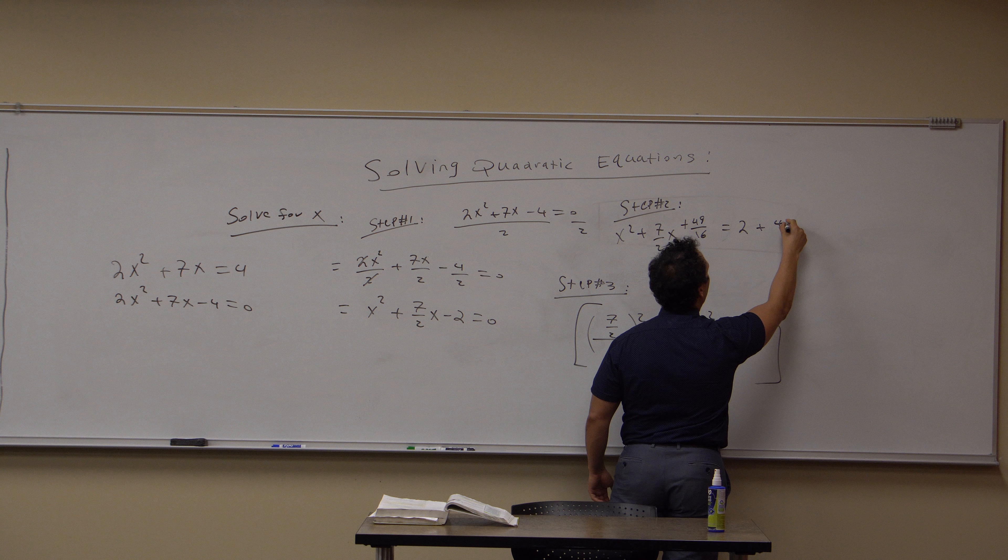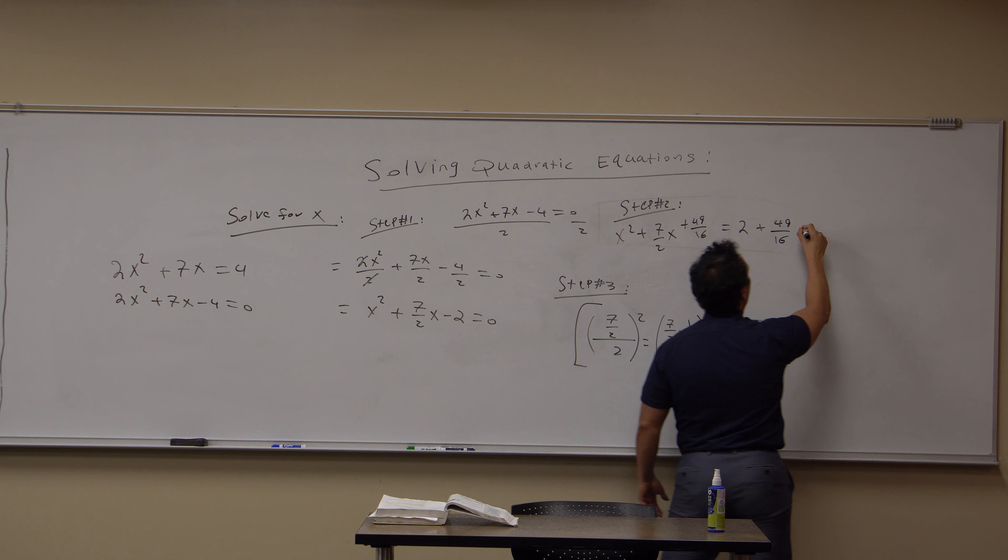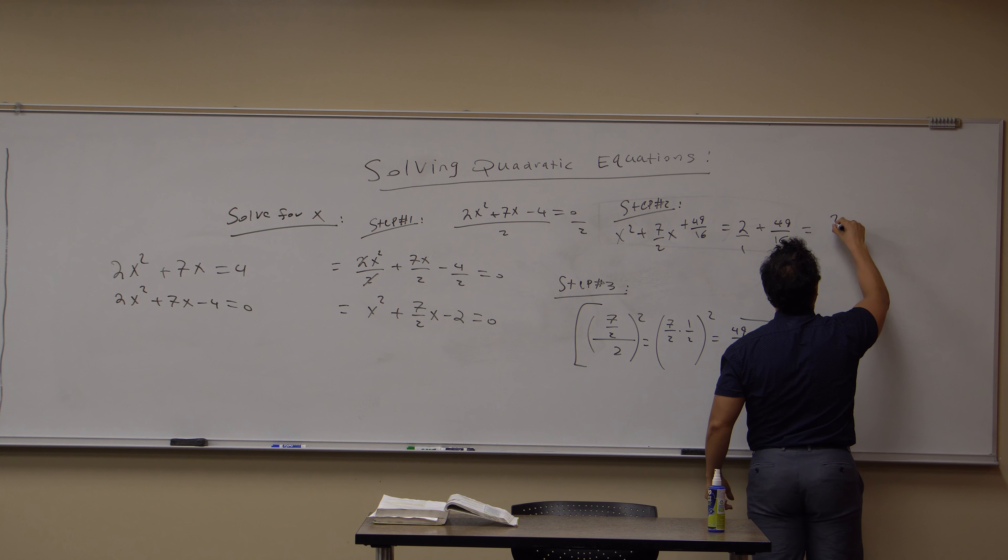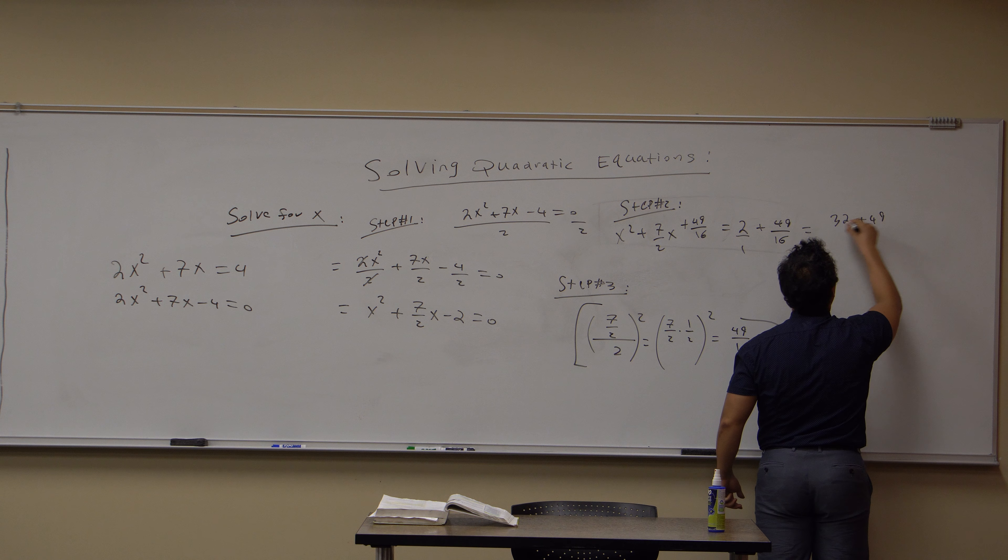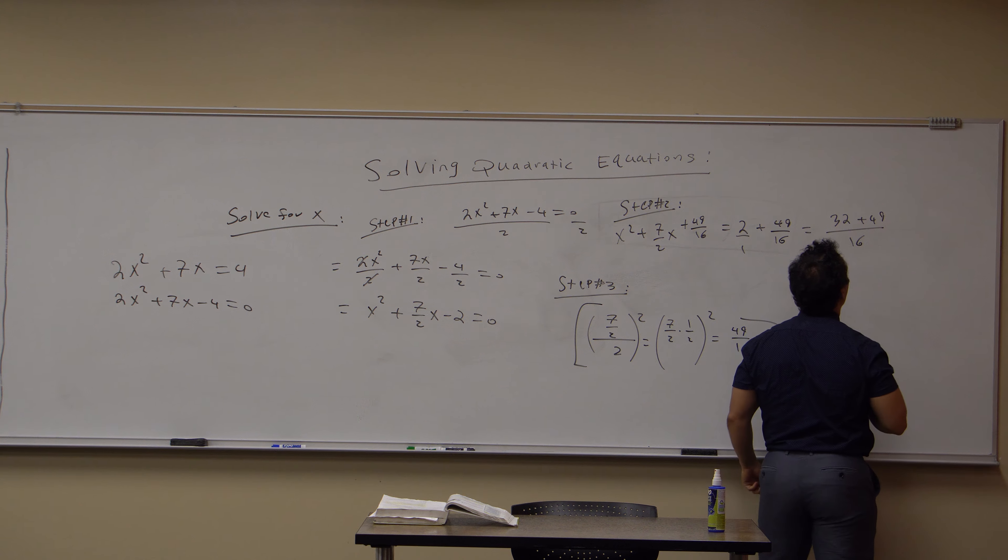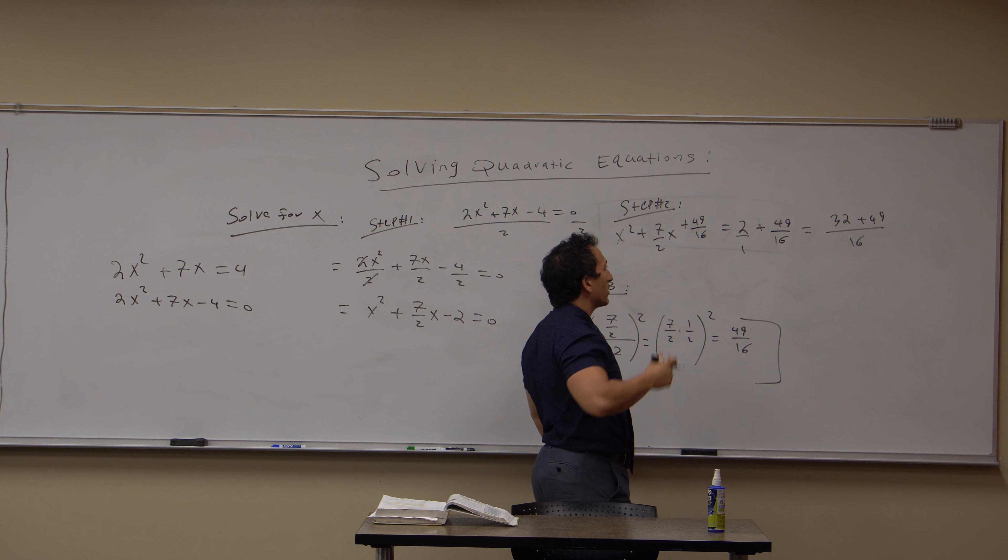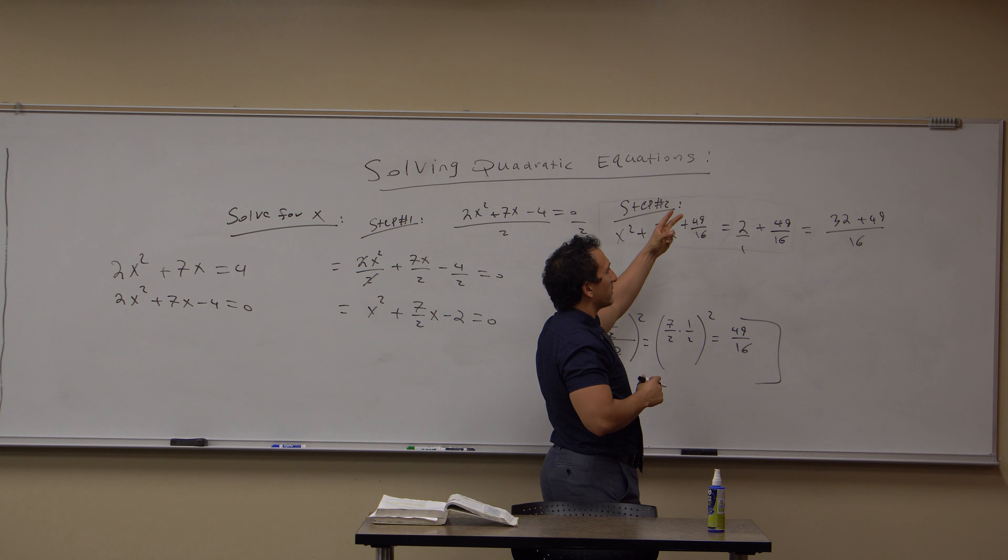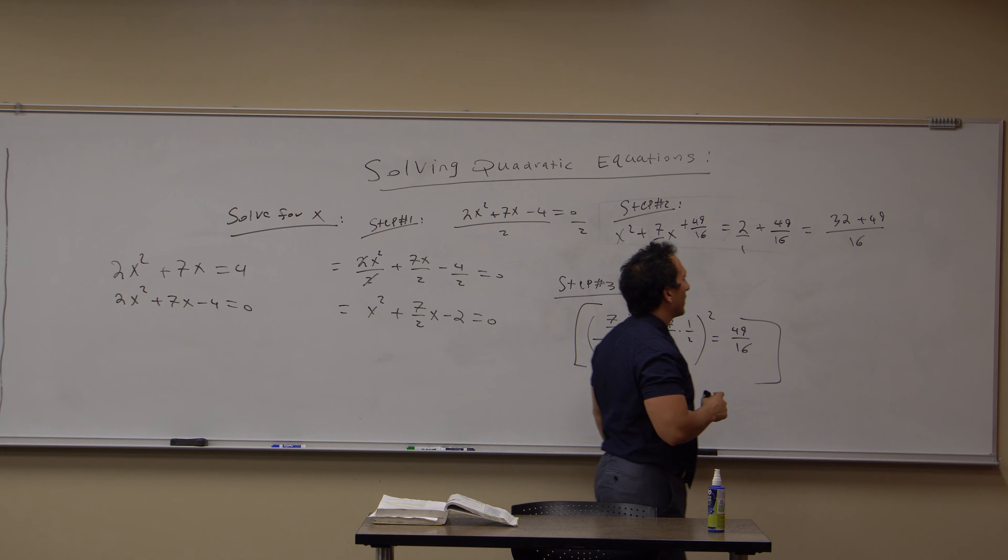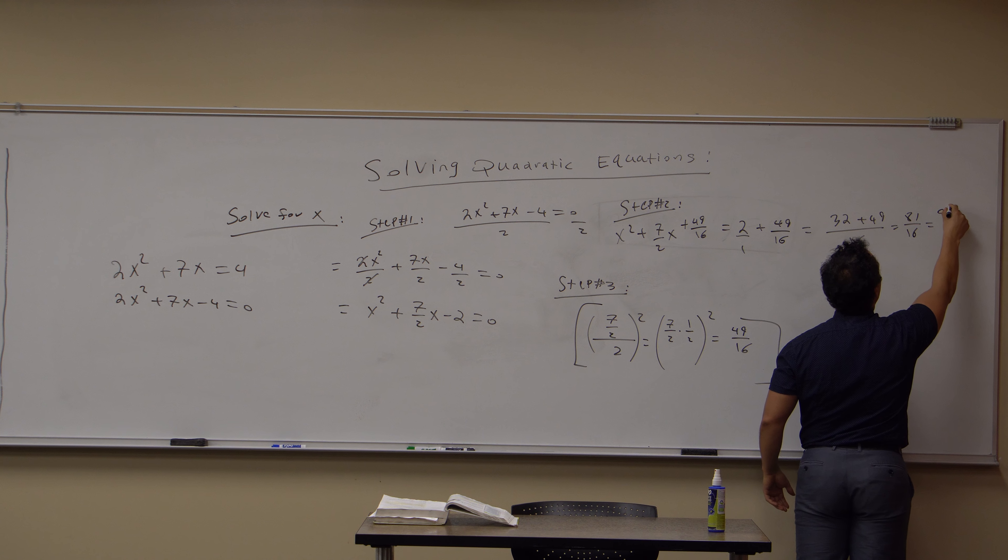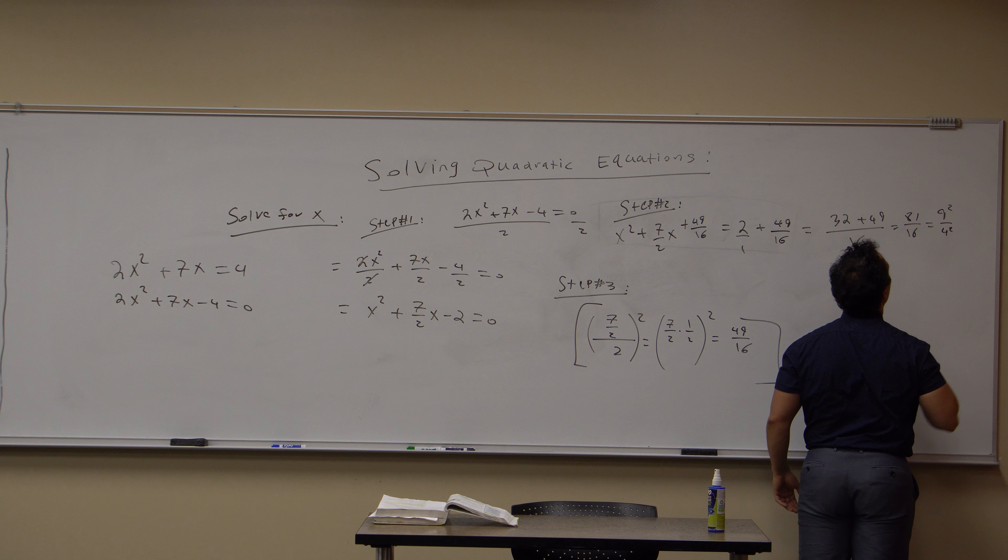Now, just working on this side, if I multiply top and bottom here by 16, I get 32 + 49 all over 16. And 32 + 49, if I make that a 31, that's 50, 60, 70, 80. And I still have that 1, which is 81/16. And that's really 9²/4². Okay.